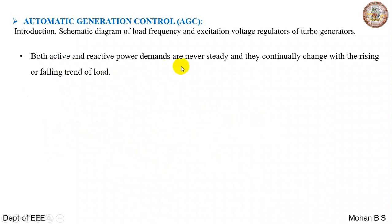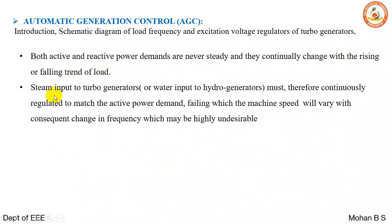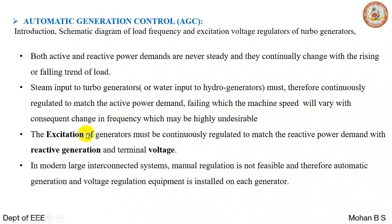Both active and reactive power demands are never steady and they continually change with the rise or fall trend of load. Steam input to the generators must therefore continuously regulate to match the active power demand, failing which the machine speed will vary with consequent change in frequency, which might be highly undesirable. The excitation of the generator must also be continuously regulated to match the reactive power demand. In modern large interconnected systems, manual regulation is not possible, and therefore automatic generation and voltage regulator equipment is installed in each generator.